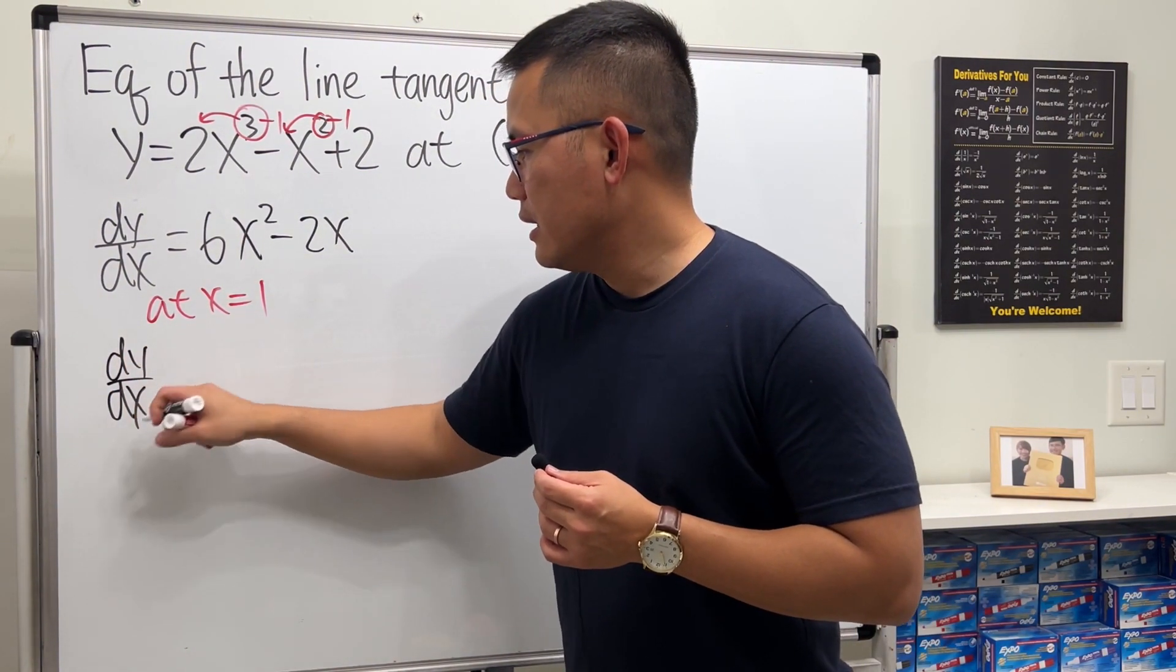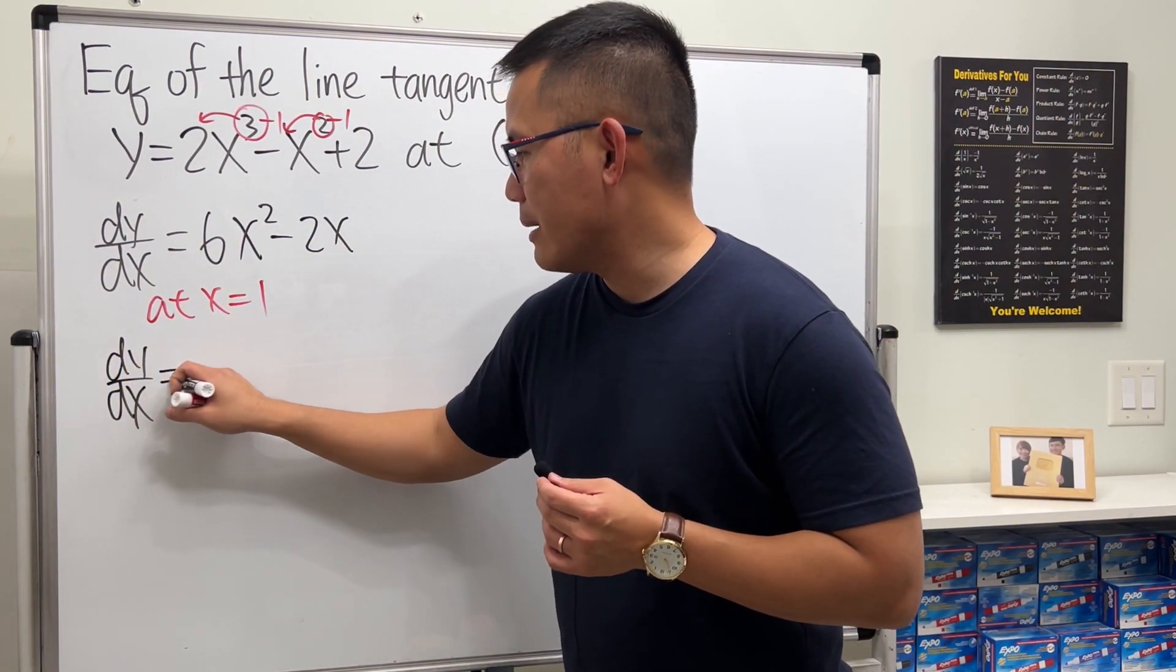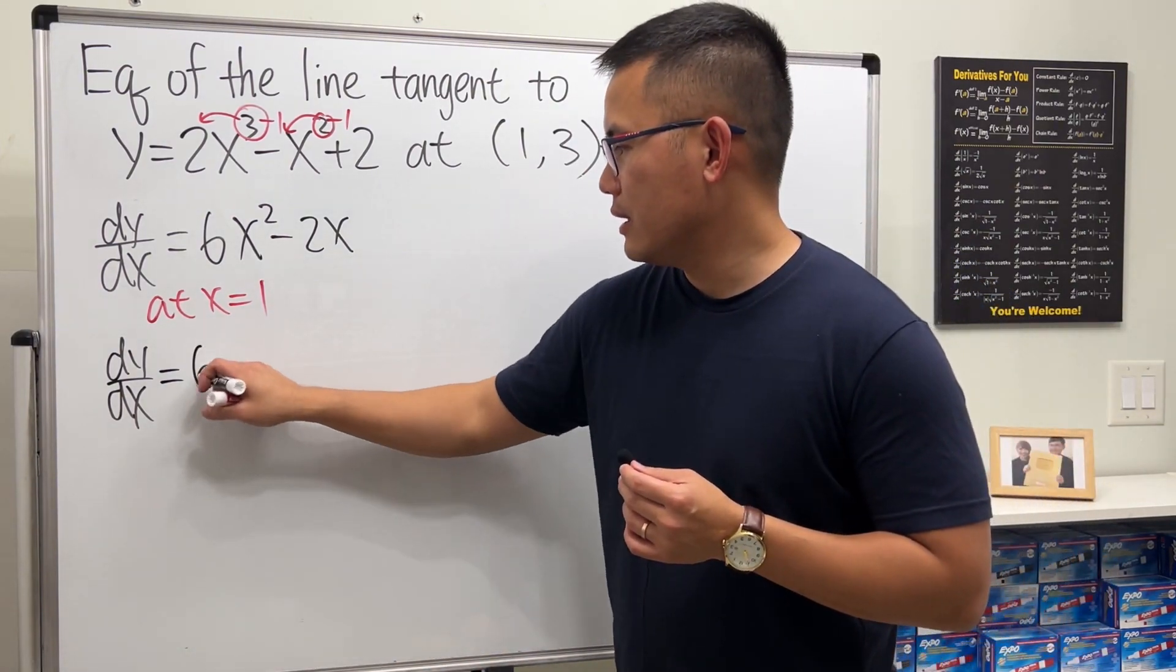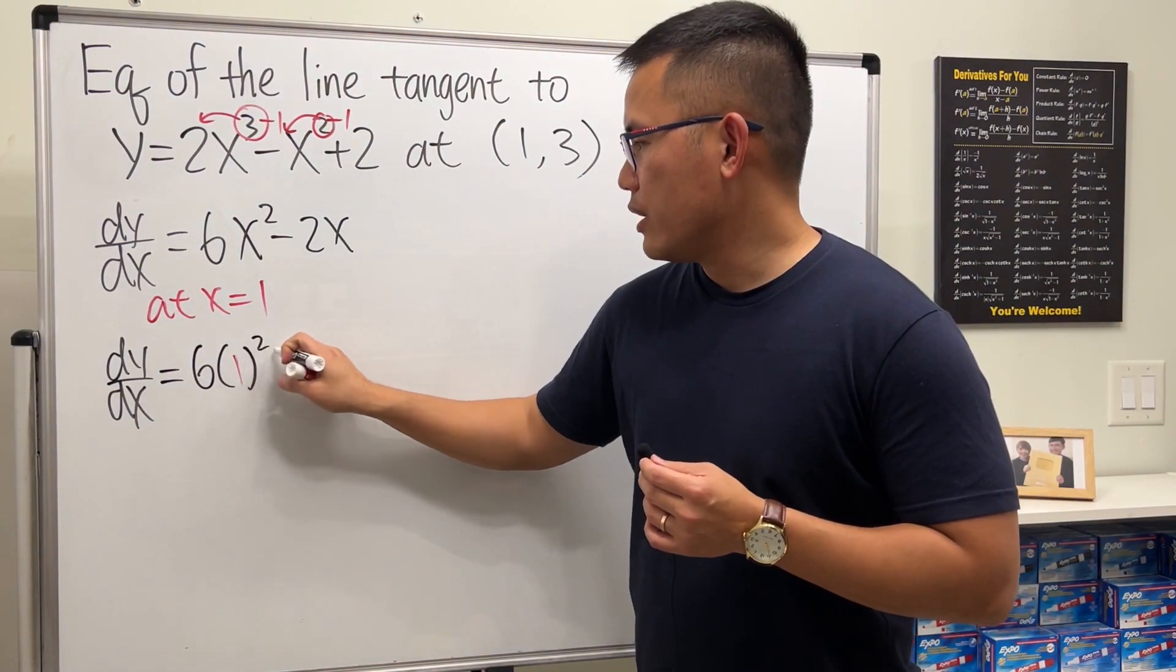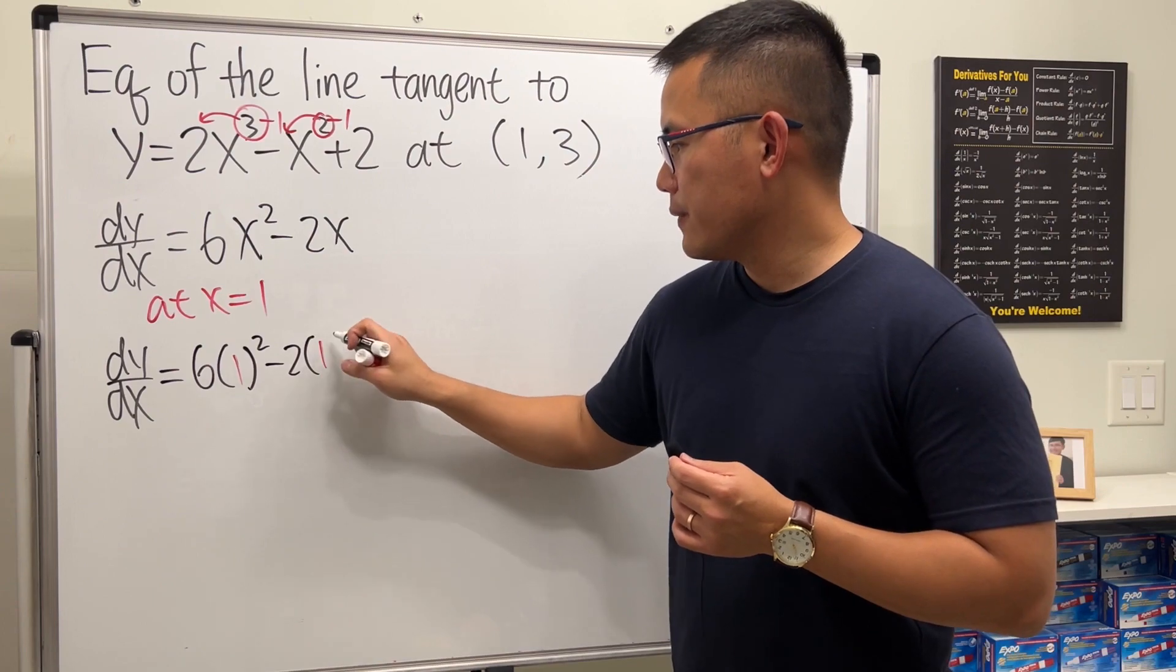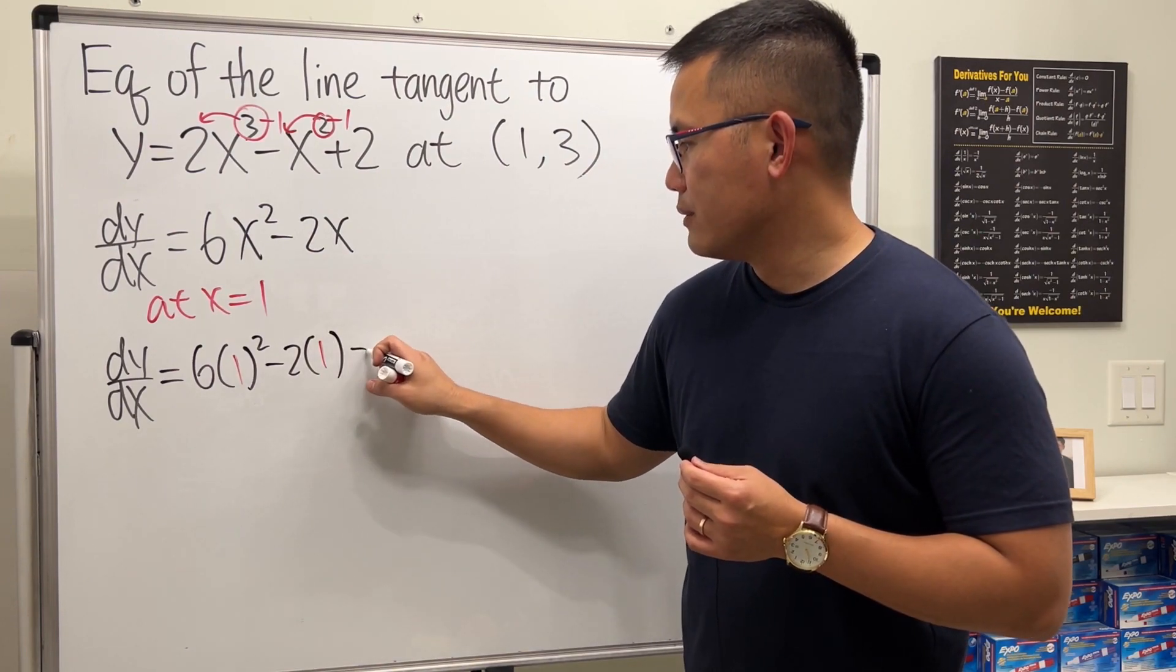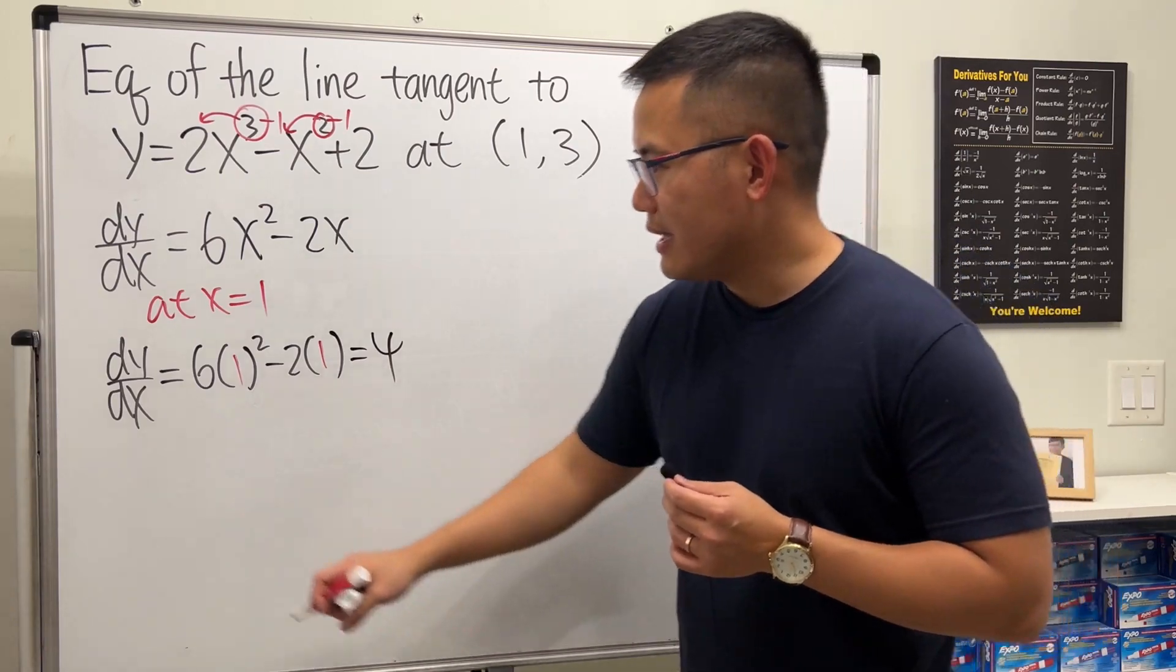Let x equal one. dy/dx is the slope—you can put down m if you want. This is just 6 times 1 squared minus 2 times 1, and that's going to be 4. This is the m, the slope.